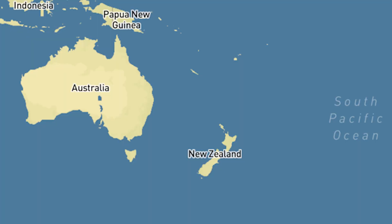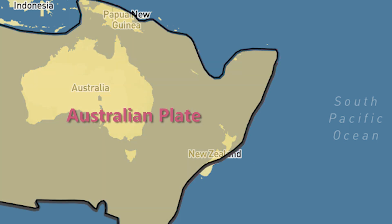The estimate is that there's about 150 to 200 earthquakes that happen around New Zealand every year. So what's the deal? Why does this area have so much seismicity? Well, it has to do with the fact that New Zealand and the Kermadek Islands sit on top of a boundary between two massive tectonic plates, the Australian Plate to the west and the Pacific Plate to the east.